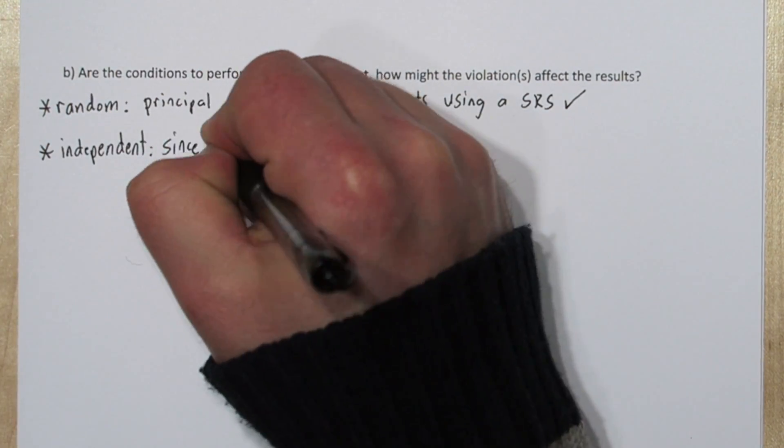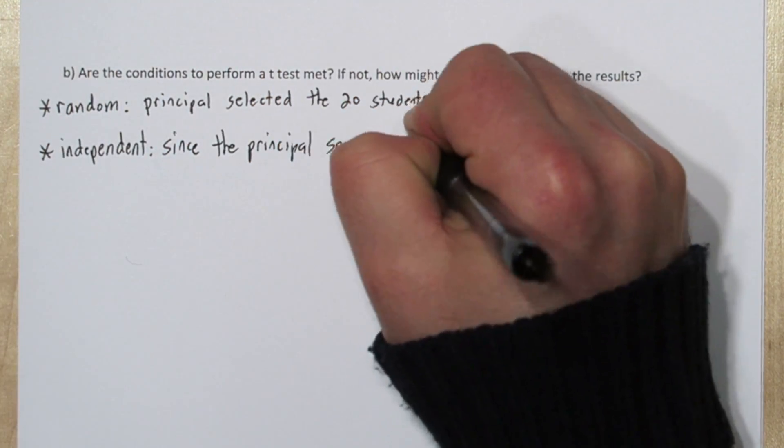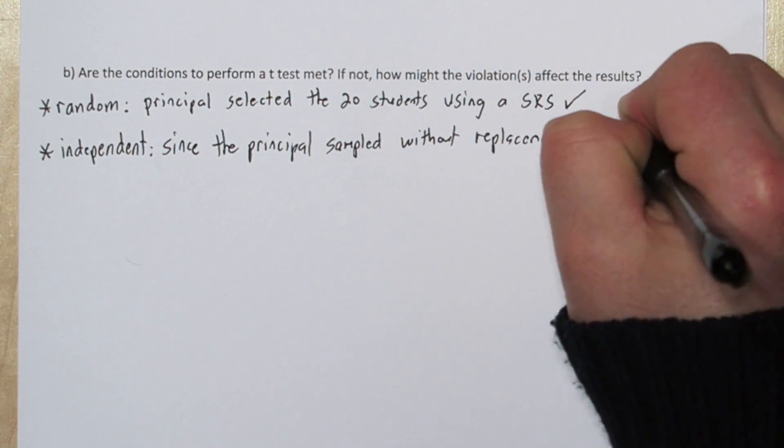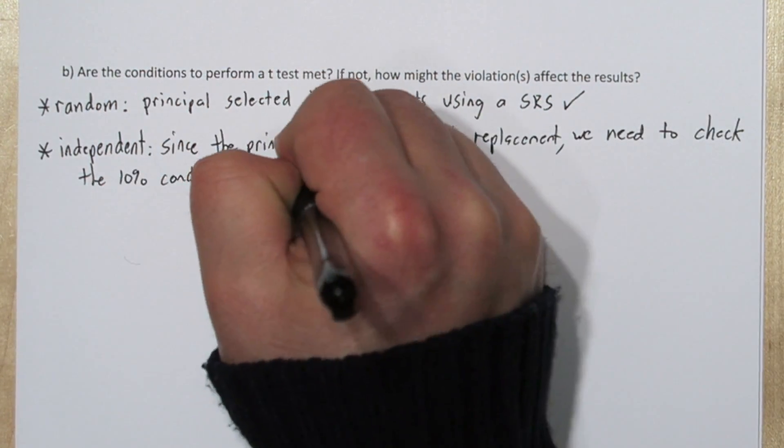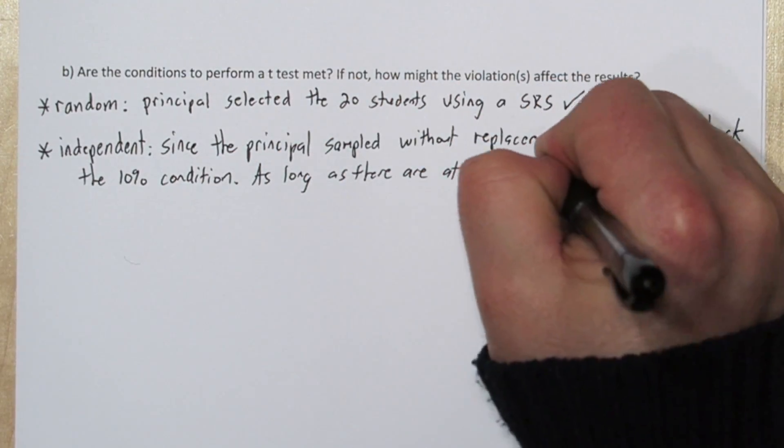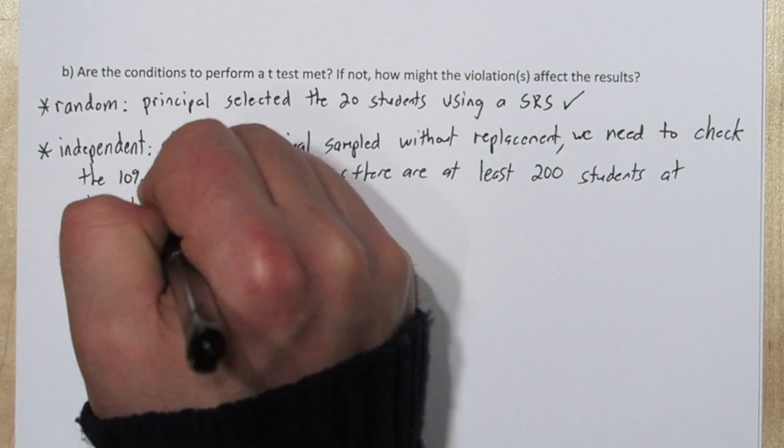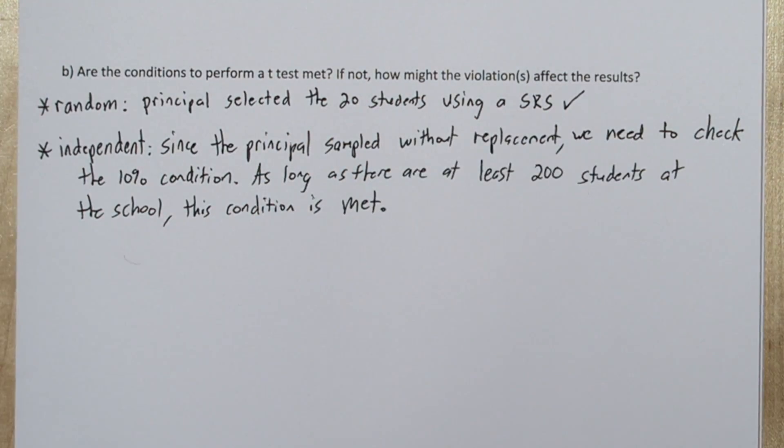The next condition is the independent condition. Since the principal is sampling without replacement, we need to check the 10% condition. As long as there's at least 200 students at this school, and most schools have at least 200 students, the 10% condition is met.